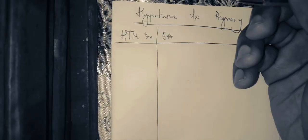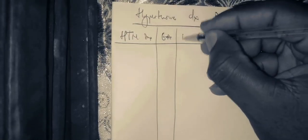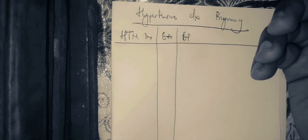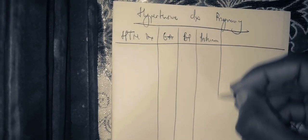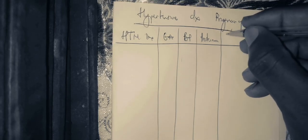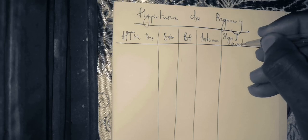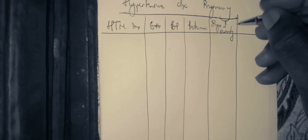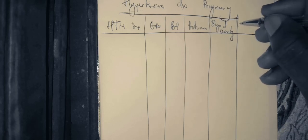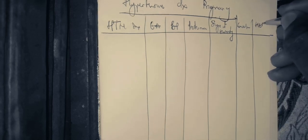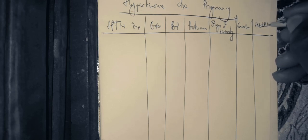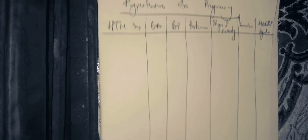In the table, the columns are: the name of the hypertensive disease, the gestational age at which it occurs, the blood pressure values, the proteinuria status, the presence or absence of signs of severity, the presence of conversion, and finally the presence of HELLP syndrome.